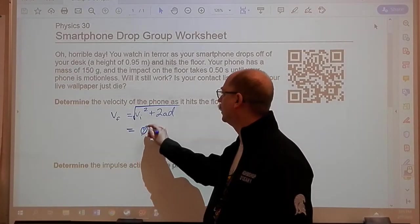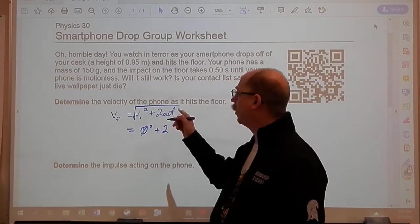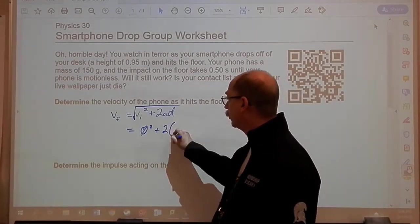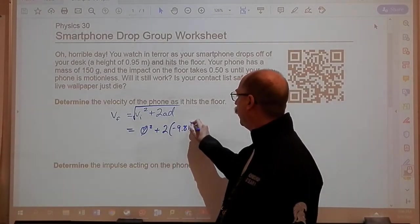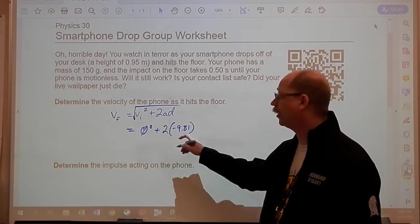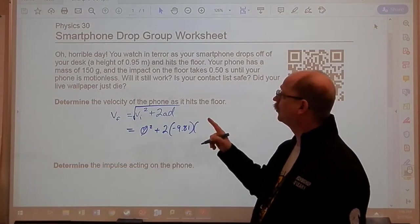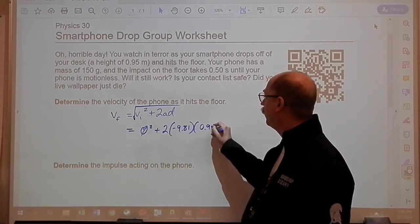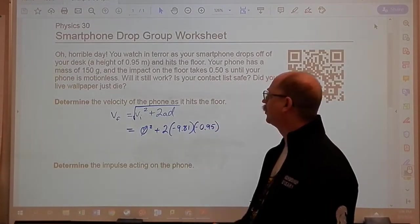The initial velocity is 0. Now be careful when you put in the acceleration and the displacement because that's a vector also. It's falling with negative acceleration and the falling also means that when it fell 0.95 meters that is also a negative.